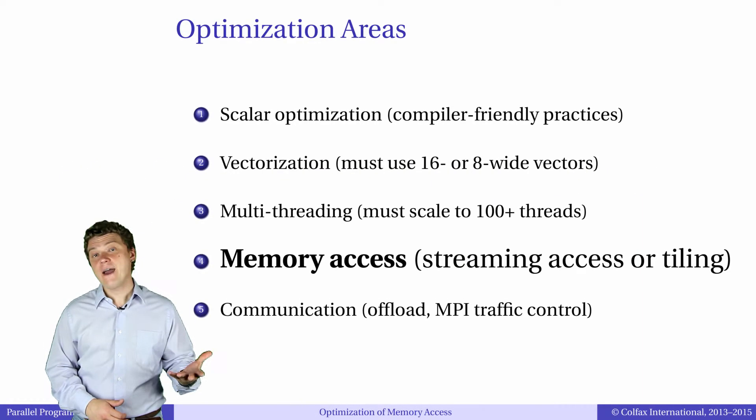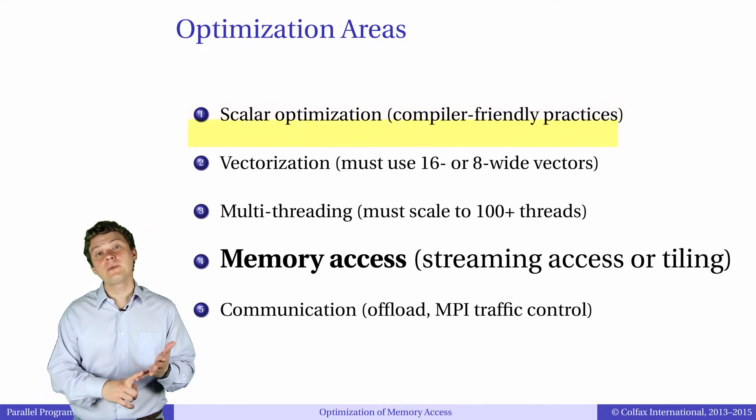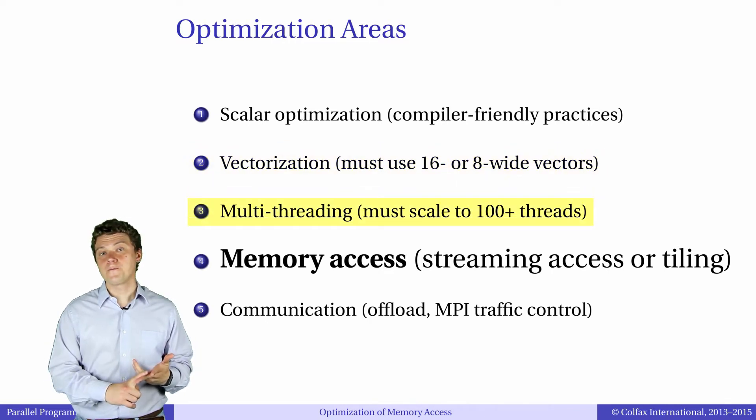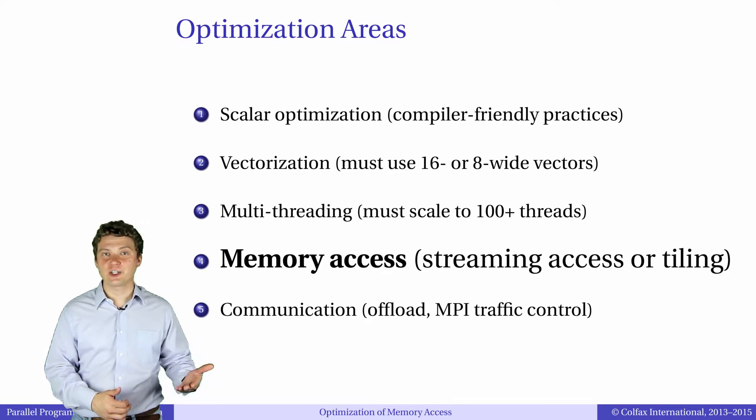In the five areas of optimization that we defined earlier, we have discussed scalar optimization, optimization of vectorization, and multi-threading. The next hardware subsystem on which one must focus in the optimization process is memory and caches.